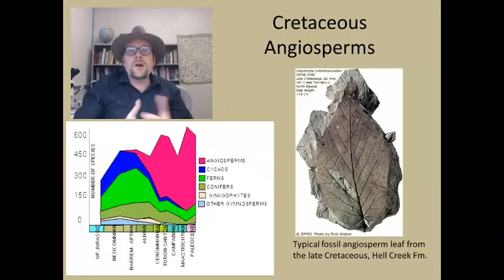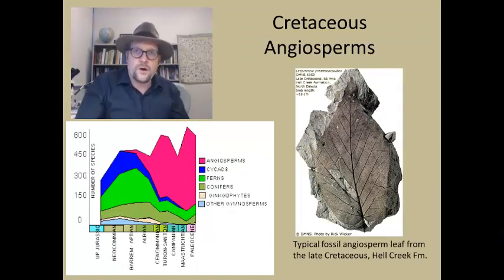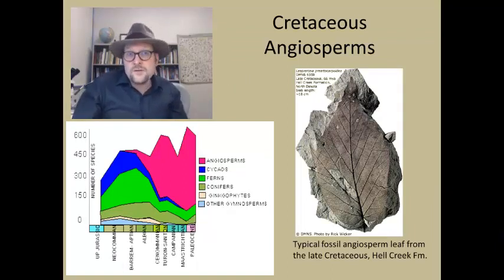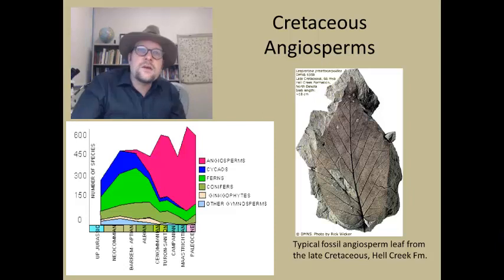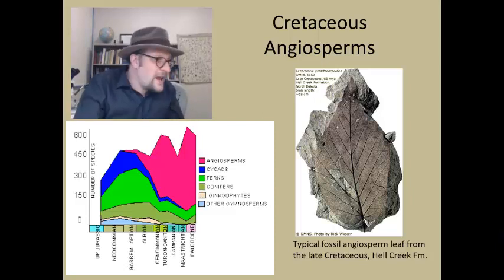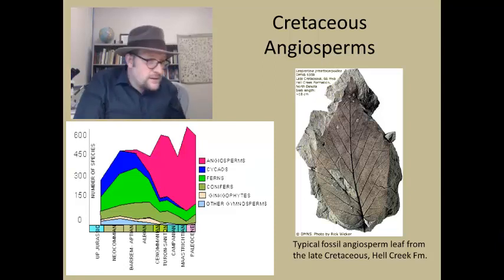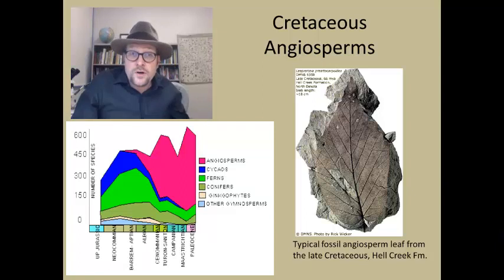One of the most remarkable transformations of the world's flora occurred during the late Cretaceous as angiosperms quickly became the dominant group of plants. Their diversity exploded, and by the late Cretaceous — for example in the Hell Creek Formation of Montana — angiosperm fossil leaves are everywhere. Into the Cenozoic, the flowering plants became super diverse.